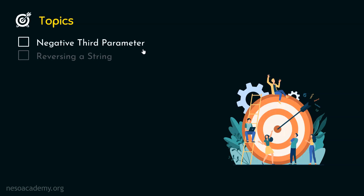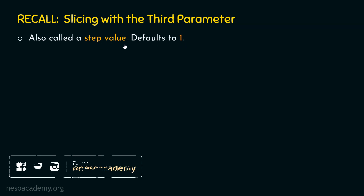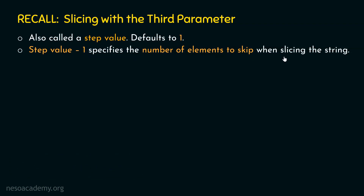We have already learned what is the third parameter in the last lecture. Let's recall what is the meaning of third parameter in slicing. The third parameter is also called a step value, and it defaults to one. Step value minus one specifies the number of elements to skip when slicing the string.